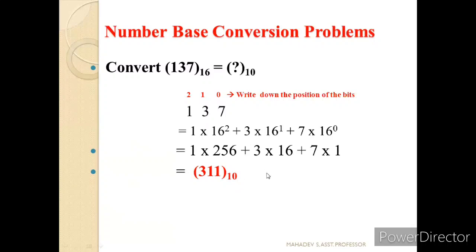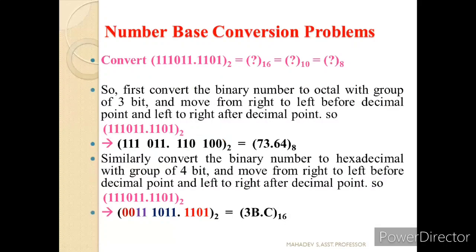You can observe how easily we convert from one number base system to another. Now let us understand with a fractional number as well. Let us convert 11011.101 base 2 to hexadecimal, decimal, and octal. If the number is given in binary, grouping of 3 bits or grouping of 4 bits can be done very easily for octal and hexadecimal.